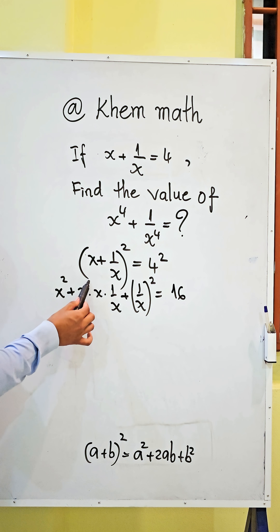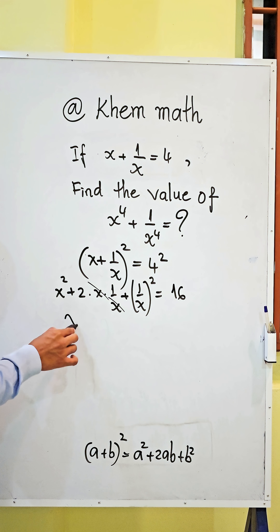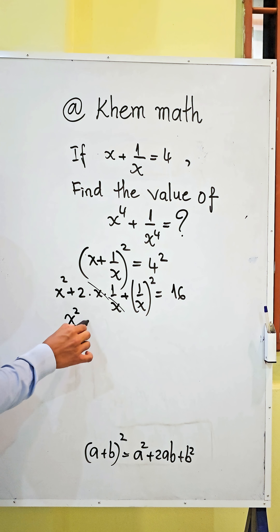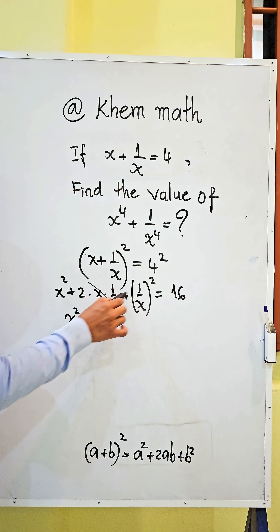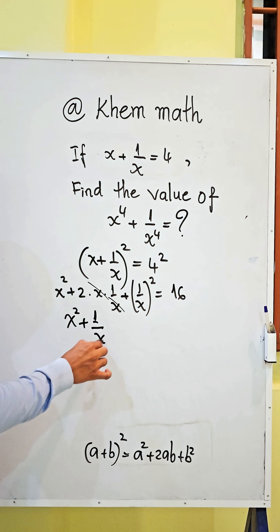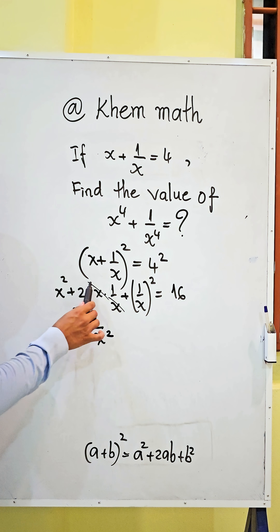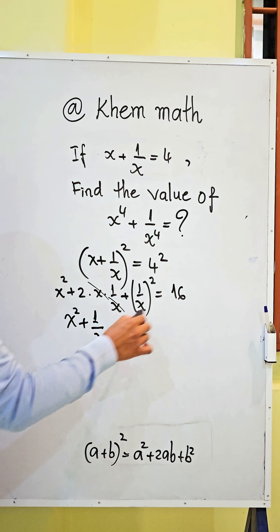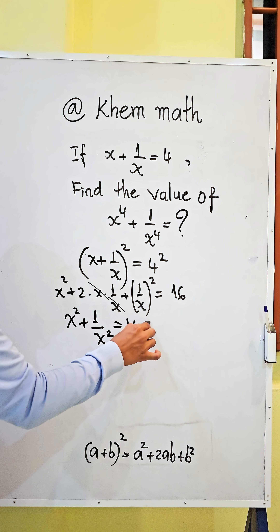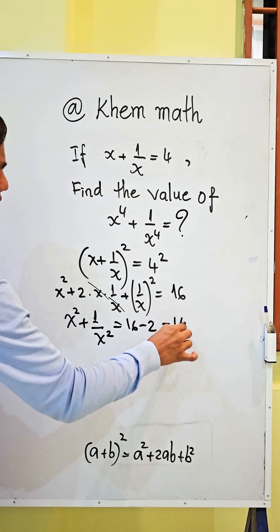And here, we simplify it. So we get x² plus 1/x². To move the 2 to the right-hand side, we get 16 minus 2, which equals 14.